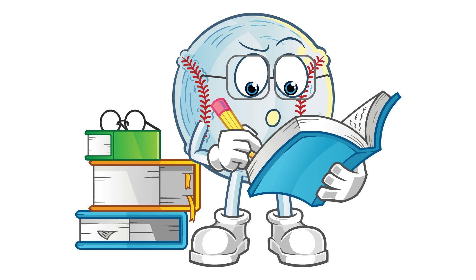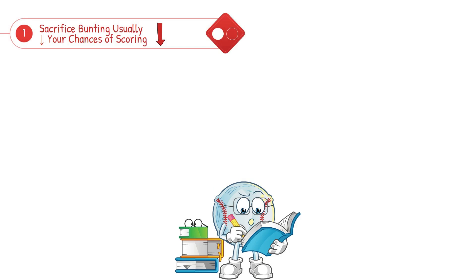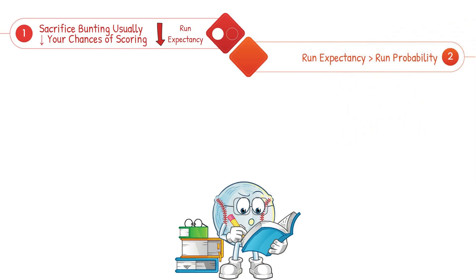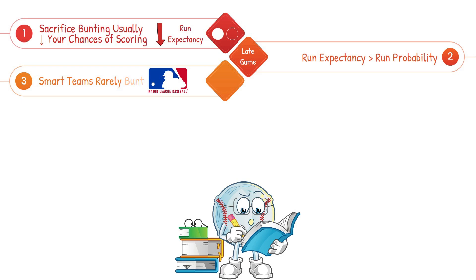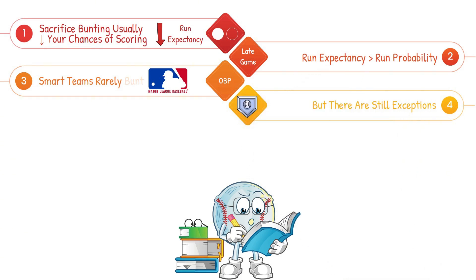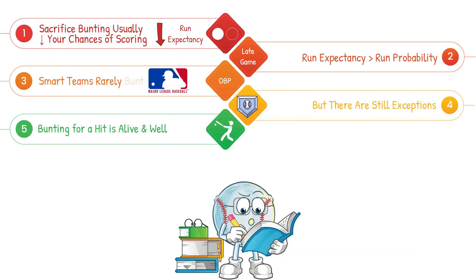Let's recap. Sacrifice bunting usually decreases your chances of scoring — giving up an out drops your run expectancy in most scenarios, especially early in the game. Run expectancy is more important than run probability; unless you're in a tight, late game, playing for just one run typically isn't worth the cost of a single out. Smart teams rarely bunt — across MLB, bunts have nearly vanished, replaced by power, OBP, and better run-maximizing tactics. But there are still exceptions: late innings, runner on second in the new extra inning rule, weak contact hitters, or pitchers at the plate. Bunting for a hit is still alive — fast, savvy hitters who can drop one down force the defense to adjust and can turn the skill into a strategic weapon.